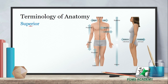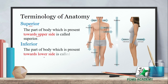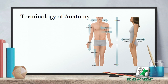The part of body which is present towards upper side is called superior. The part of body which is present towards lower side is called inferior. Superior body کا وہ part ہوتا ہے جو upper side پہ ہوتا ہے، for example head is superior to legs۔ اور جو legs ہیں وہ lower side پہ ہیں اس لیے ان کو ہم inferior بولیں گے۔